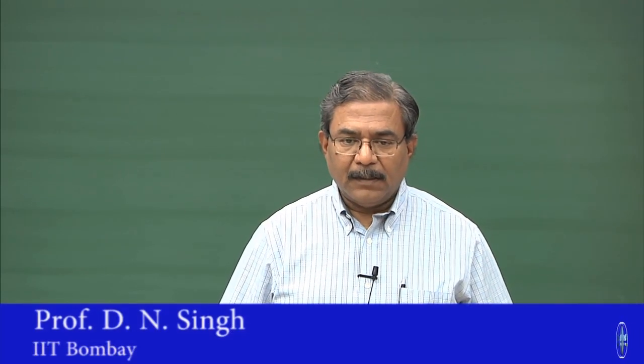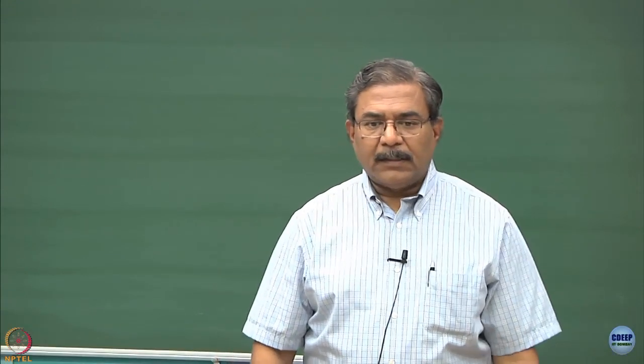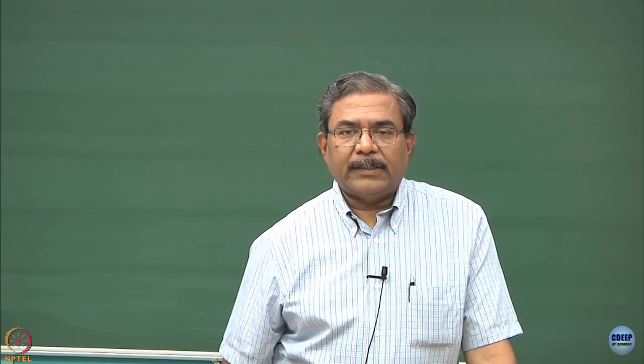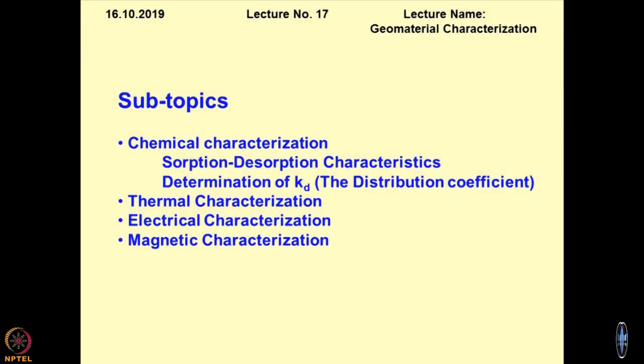Since several lectures, I have been discussing about the geometrical characterization and in particular the chemical characterization. We have discussed a lot of things under the realm of chemical characterization, and in the last lecture we were discussing about contaminant transport through porous media. This is where I had coined the concept of sorption-desorption mechanisms or characteristics. We also discussed the one-dimensional advection-diffusion equation, which is the best way to quantify the geomaterial-contaminant interaction.